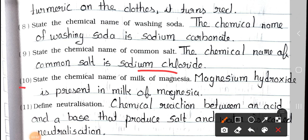Number 10: State the chemical name of milk of magnesium. Answer: Magnesium hydroxide is present in milk of magnesium.